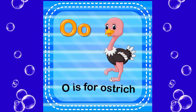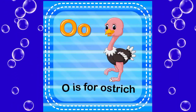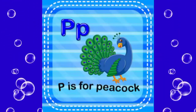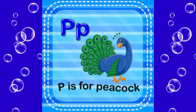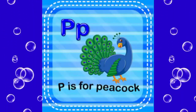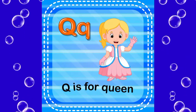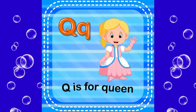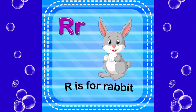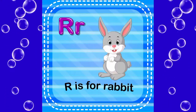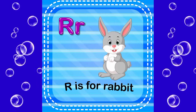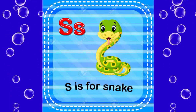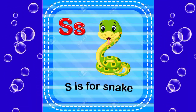O is for ostrich, P is for picker, Q is for queen, R is for rabbit, S is for snack.